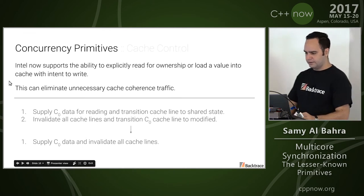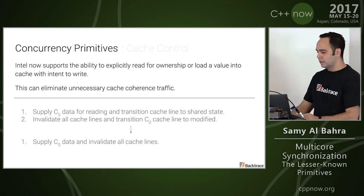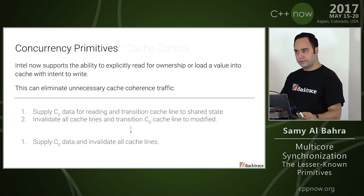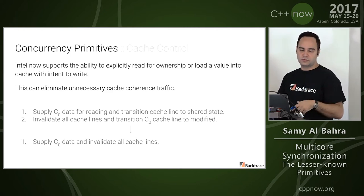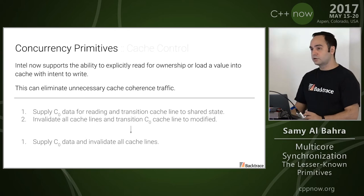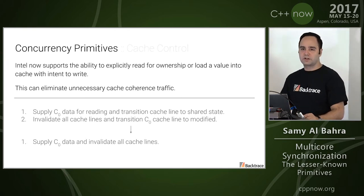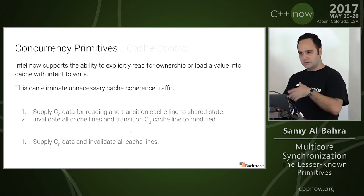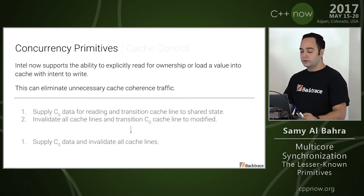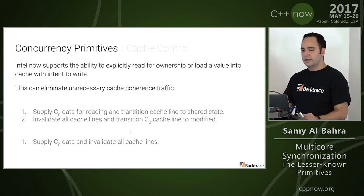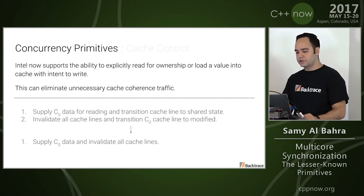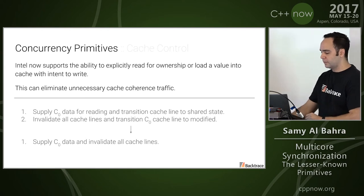Last but not least, at least on Intel, one thing that was introduced recently is a prefetch-w instruction, which allows you to read for ownership — load a value into your cache with an intent to write. This can eliminate a significant amount of cache coherence traffic. With the popular cache coherency protocols of today, you would have to supply the reading core for reading and then broadcast a request to all cache lines which hold the value. As you write, you have to invalidate all the cache lines. This can actually be eliminated into a single operation if you use this instruction.